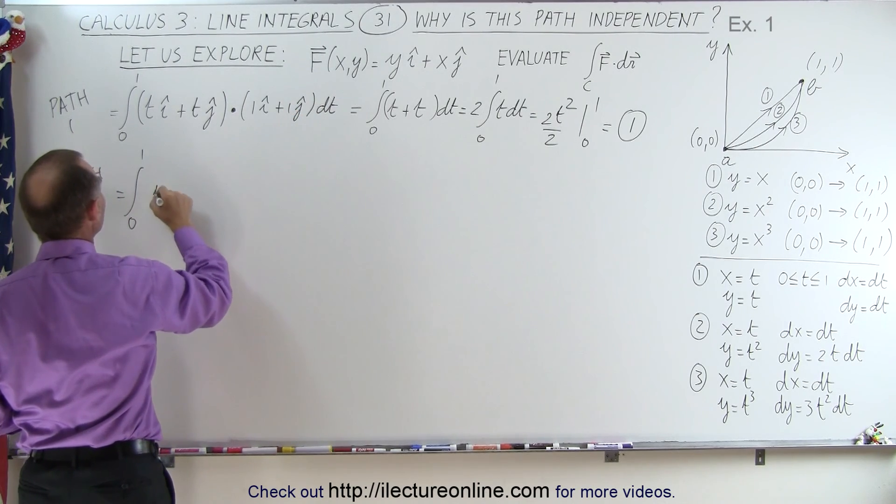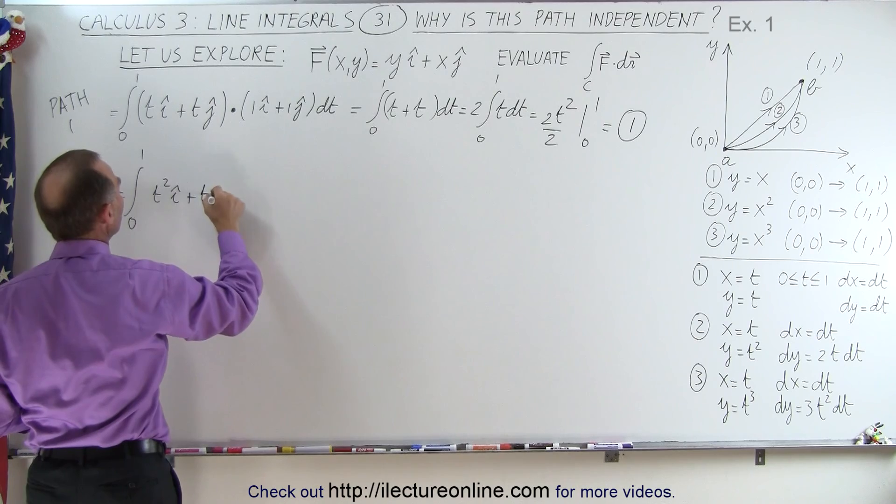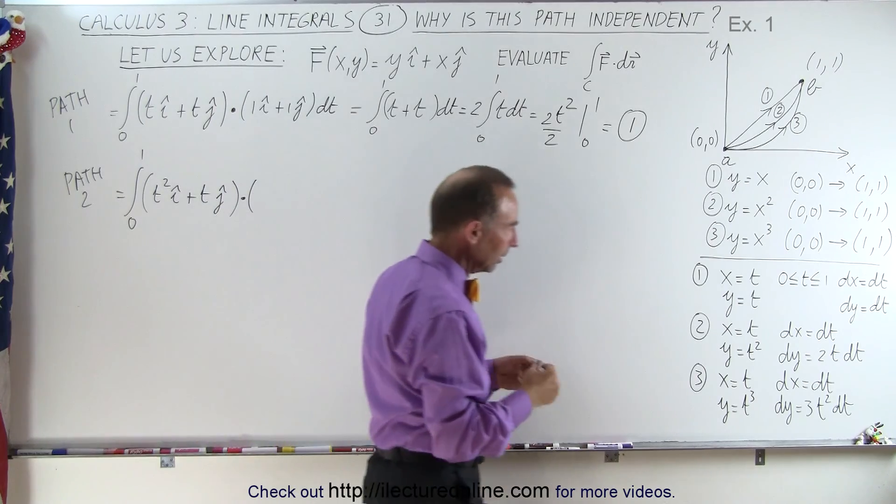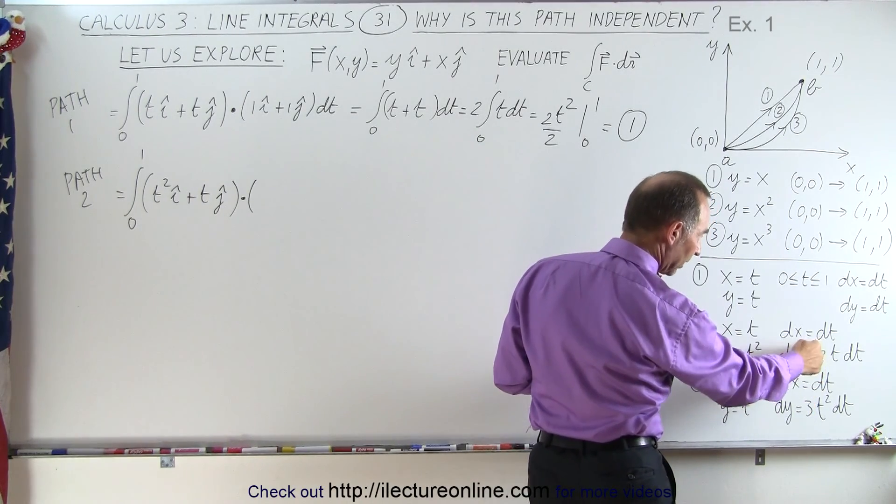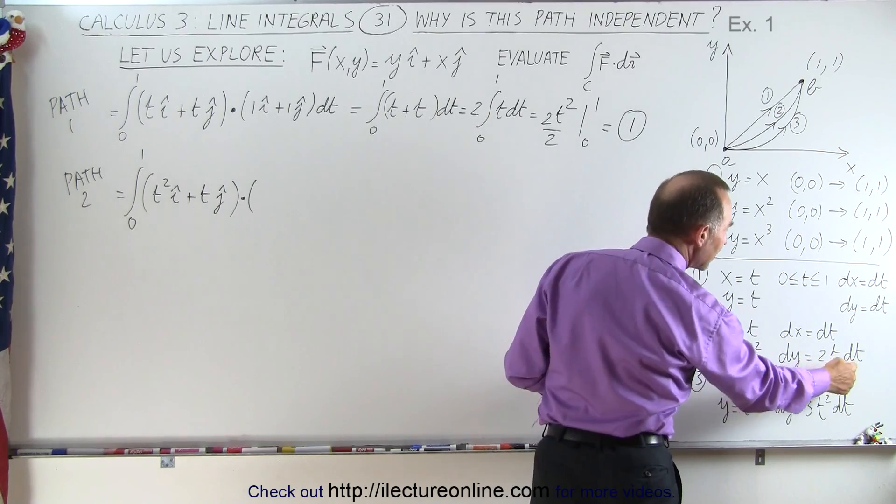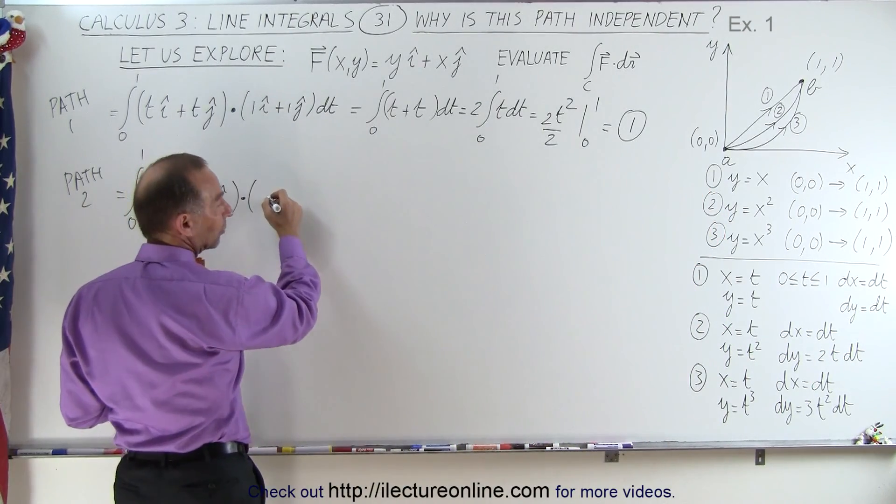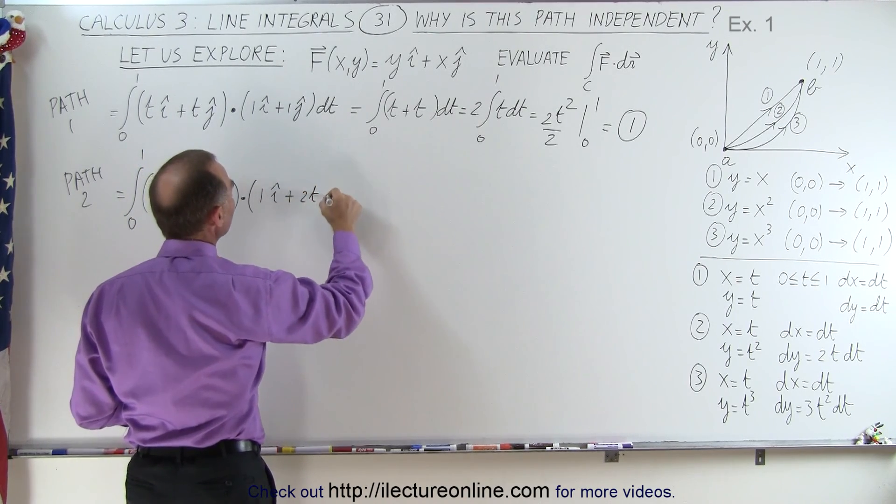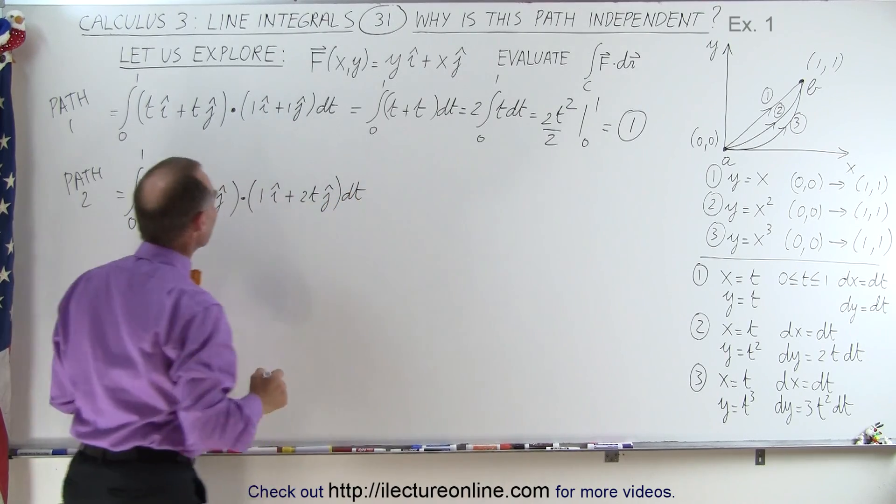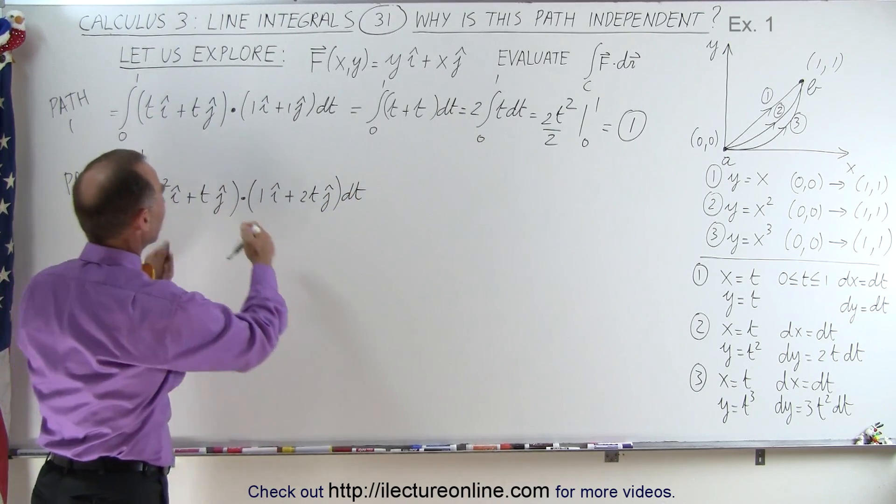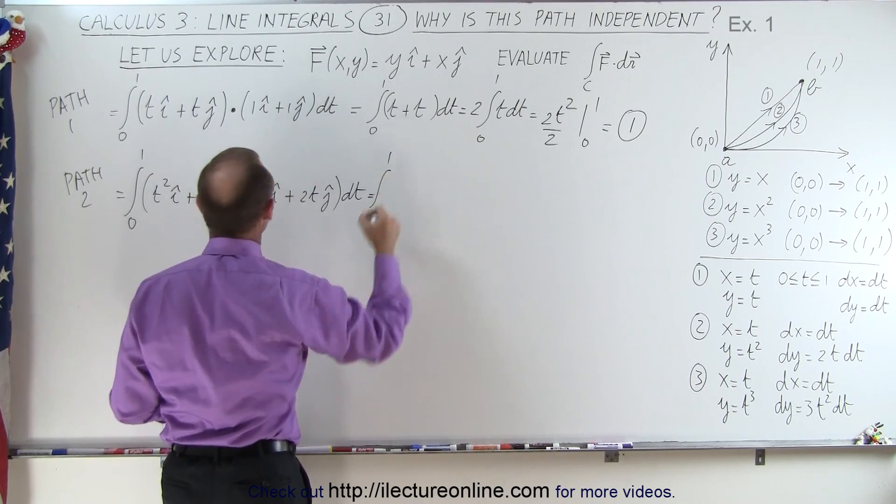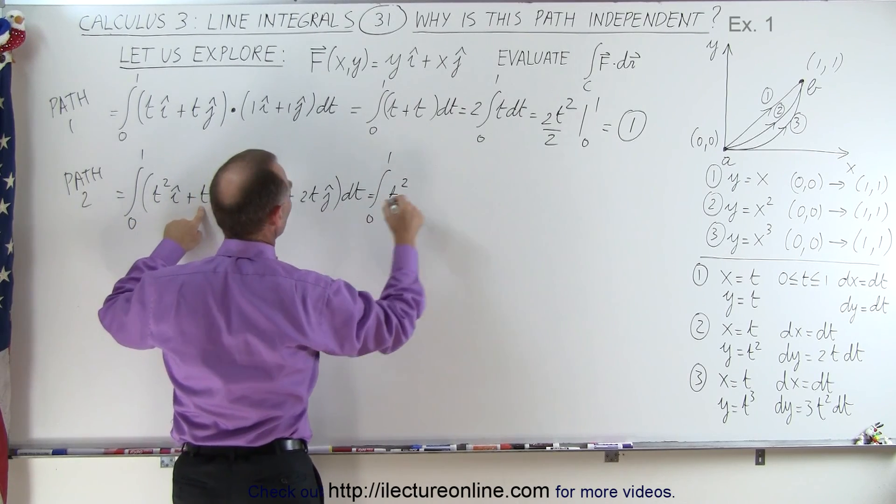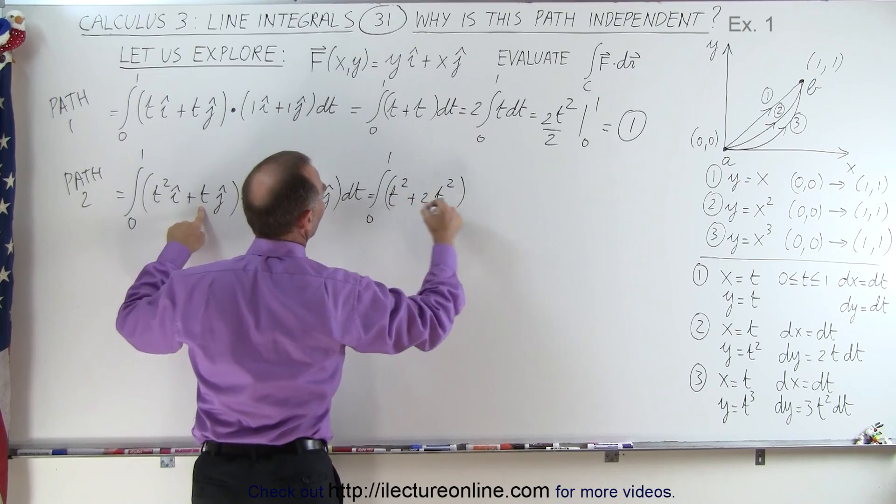So instead of y, we write t squared in the i direction plus t in the j direction. And we're going to multiply that via dot product times dr. Now notice dx is dt, but dy is 2t dt. So dr will then be written as 1 in the i direction plus 2t in the j direction times dt. And so when we multiply these together, we get the integral from 0 to 1 of t squared, the i's drop out, plus 2t squared times dt.